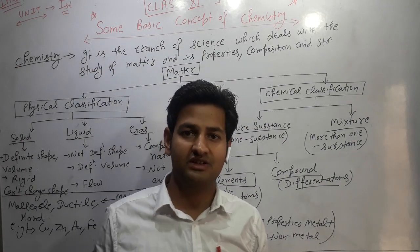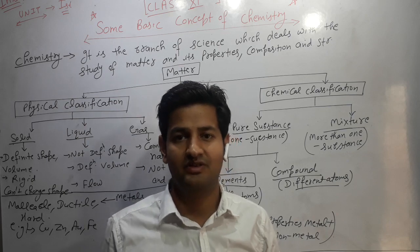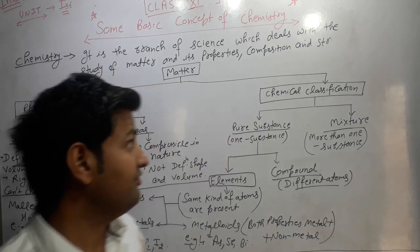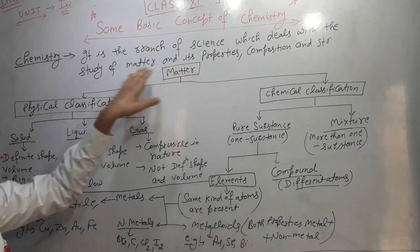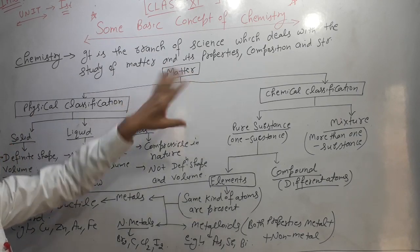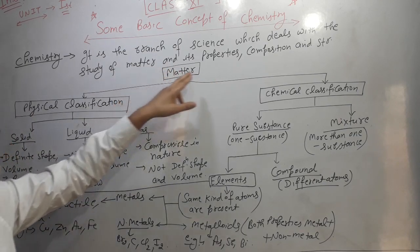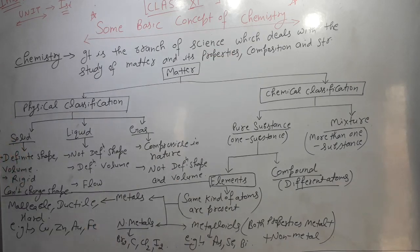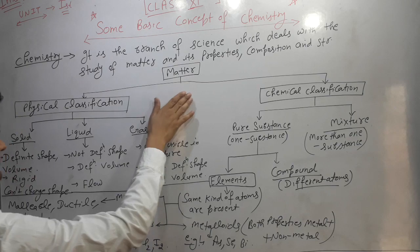Science includes three branches mainly: physics, chemistry and biology. Chemistry is the branch of science which deals with the study of all about matter. Anything which occupies space is known as matter. Matter undergoes two types of basic classification: physical classification and chemical classification.